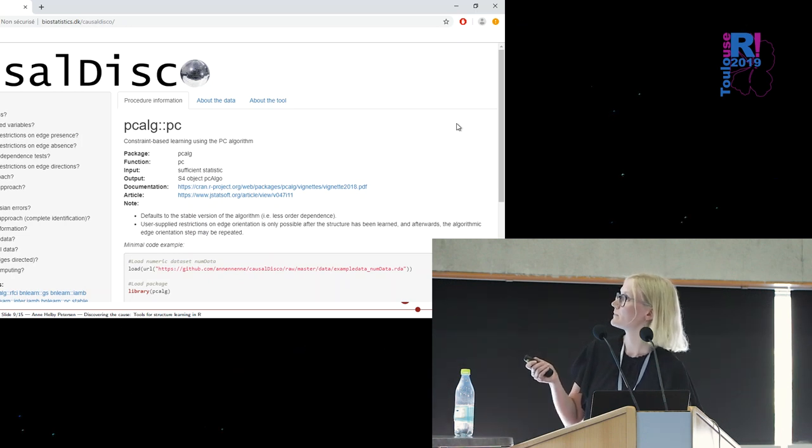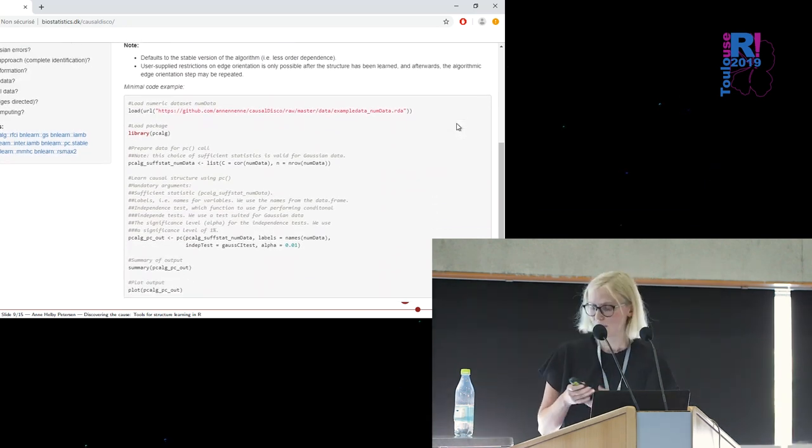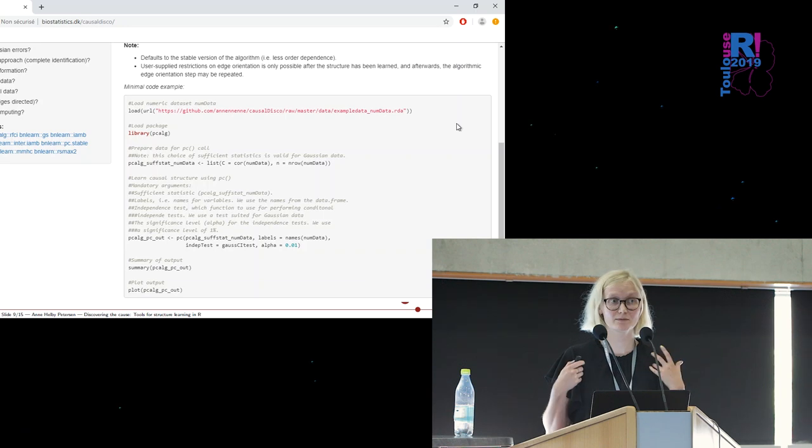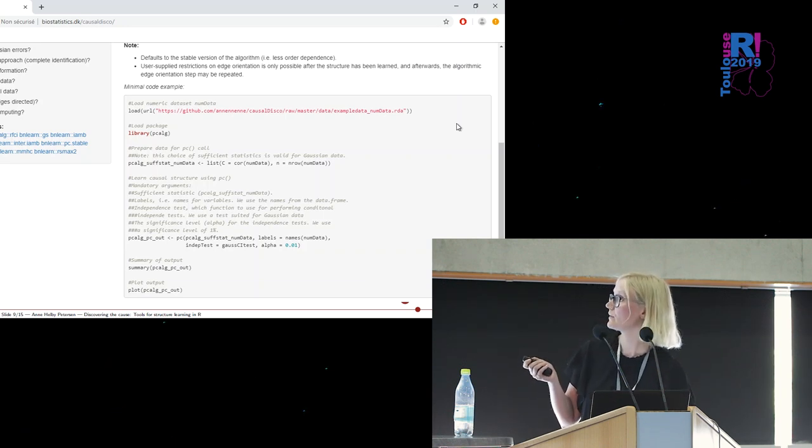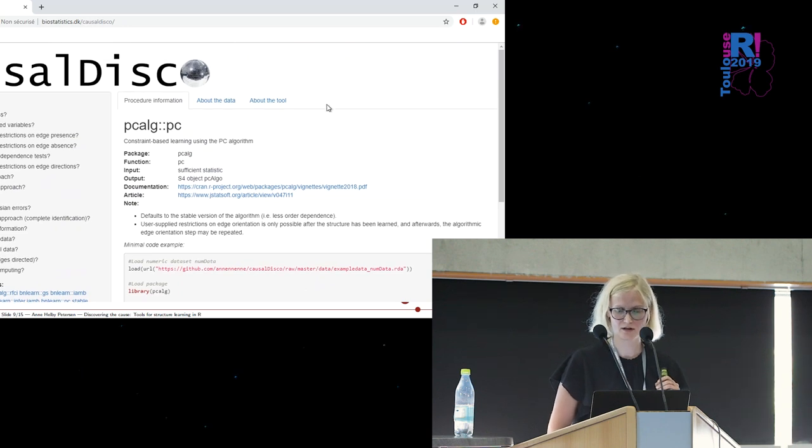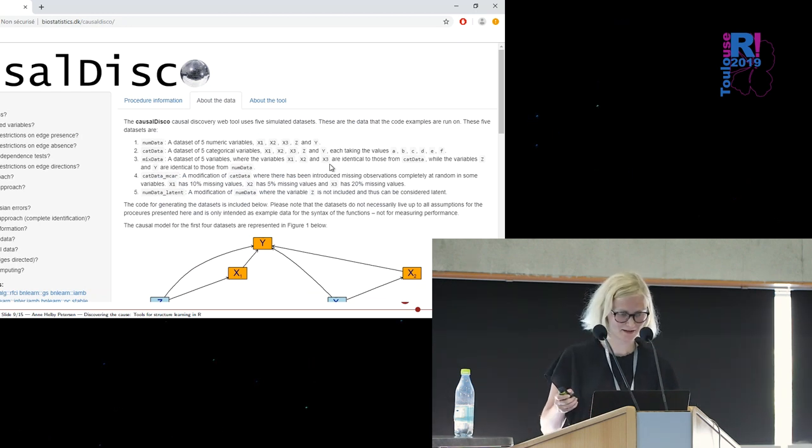There's basic information about the package and a link to detailed documentation and also to which article to cite if one is available. I've added some notes of things that I thought were not very easily learned from the documentation. And then I've provided this little code example. All of the code examples do the same thing: they fit the model or learn the graph as simple as possible to show the syntax. They only include arguments that are mandatory. And then they try to show some kind of summary and, if possible, a plot. That's the idea.